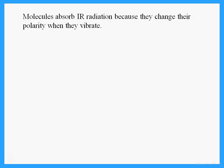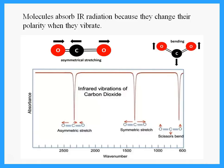Some substances can absorb IR radiation. When molecules absorb IR radiation, they change their polarity as they vibrate. A compound like carbon dioxide, for example, can absorb IR radiation, change its polarity, and this can be recorded on a spectrum showing peaks at specific wave numbers. The presence of these peaks can be used to identify the compound.